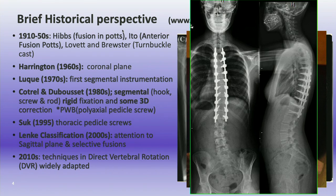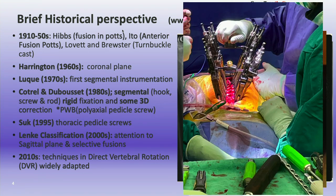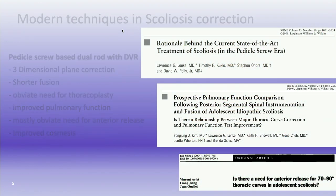Suk really popularized thoracic pedicle screws and brought us into the modern age of scoliosis correction with pedicle screw constructs in the thoracic spine. The Lenke classification was also important — for the first time we paid attention to the sagittal plane and selective fusions. In the 2000s, techniques in direct vertebral rotation became very popularized, and many systems incorporated that.